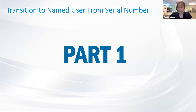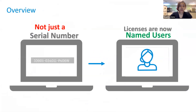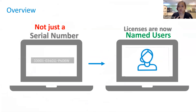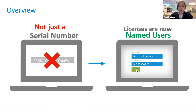So what are the basics of the transition to Named User from serial number? Basically, before this, Autodesk product licenses were marked by serial number — so whenever you had to trace or resolve something, you always needed your serial number close to you. Now, the licenses are still numbered by serial numbers, but they are also being assigned to a Named User, meaning there will be a specific person in charge of each license. We're going to go through those roles as well.